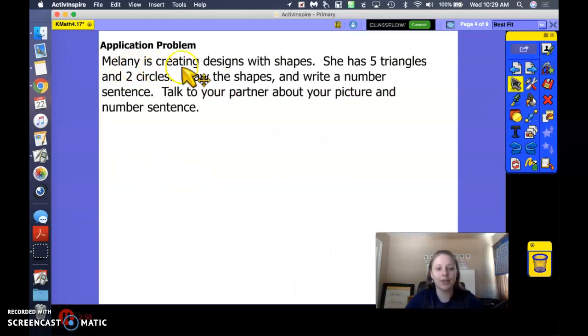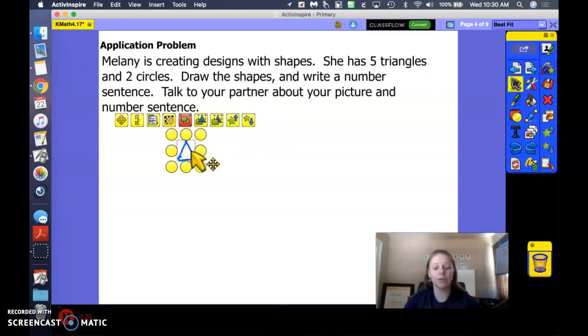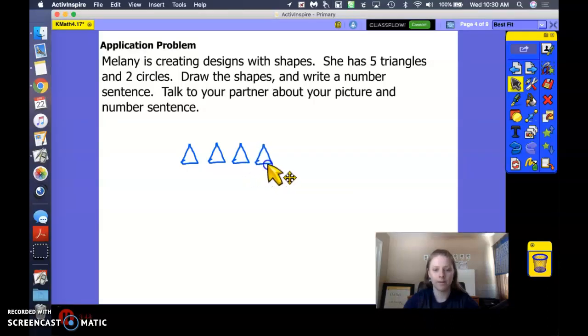Melanie is creating designs with shapes. She has 5 triangles. See if you can make a triangle with your fingers with me. Good job. Triangles have 3 corners. Let's see if we can draw one. 1, let's count in our corners. 1, 2, 3. Great job. So she has 5 triangles. So go ahead and draw a couple more and let's count and see how many we have. 1, 2, 3, 4, 5. Great job. Make sure you line up your triangles and draw them just like this so that there's a nice line of 5.